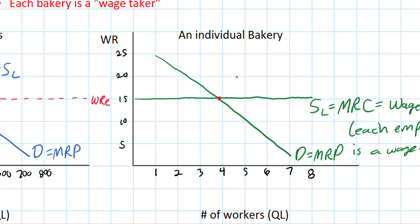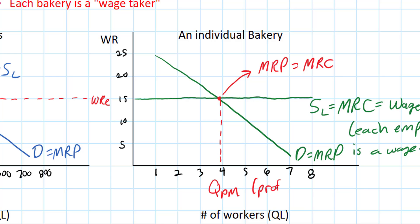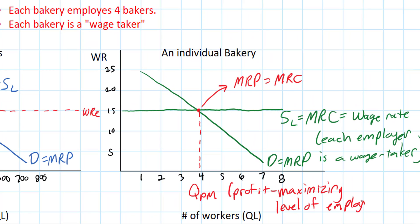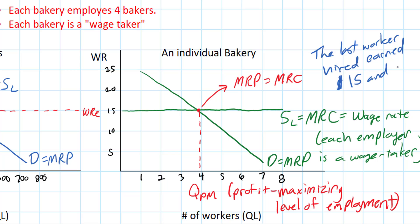There is what we call the profit maximizing rule of employment: where marginal revenue product — the revenue earned by the last baker hired — equals the marginal resource cost, the cost to the bakery of hiring that baker. At that quantity of four workers, we call this QPM, the profit maximizing level of employment. For this firm, the last worker hired earned the firm $15 and cost the firm $15.